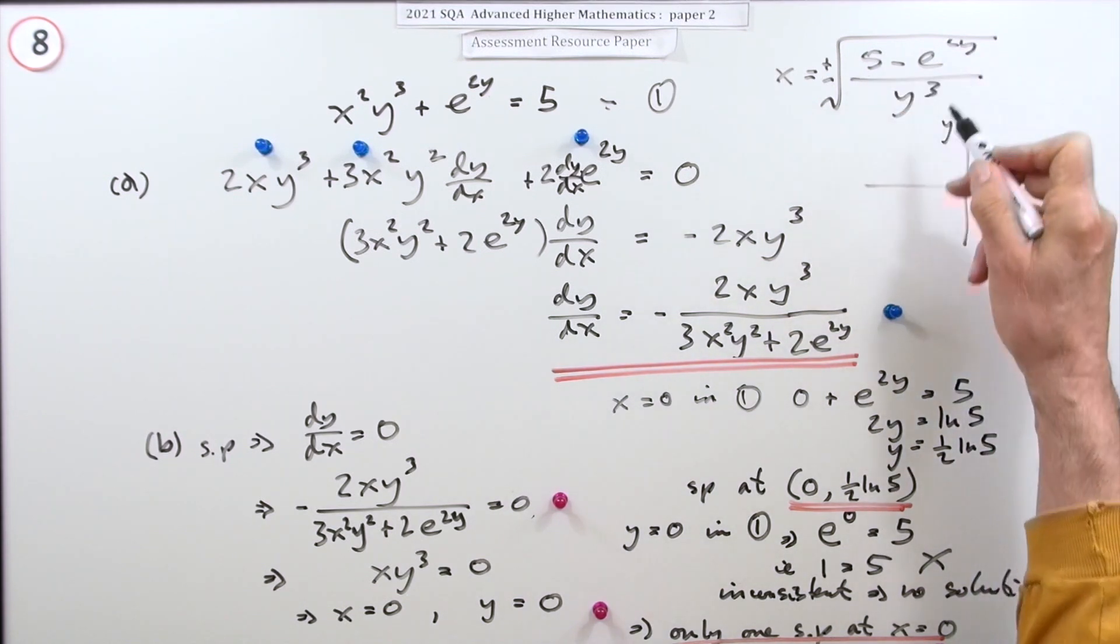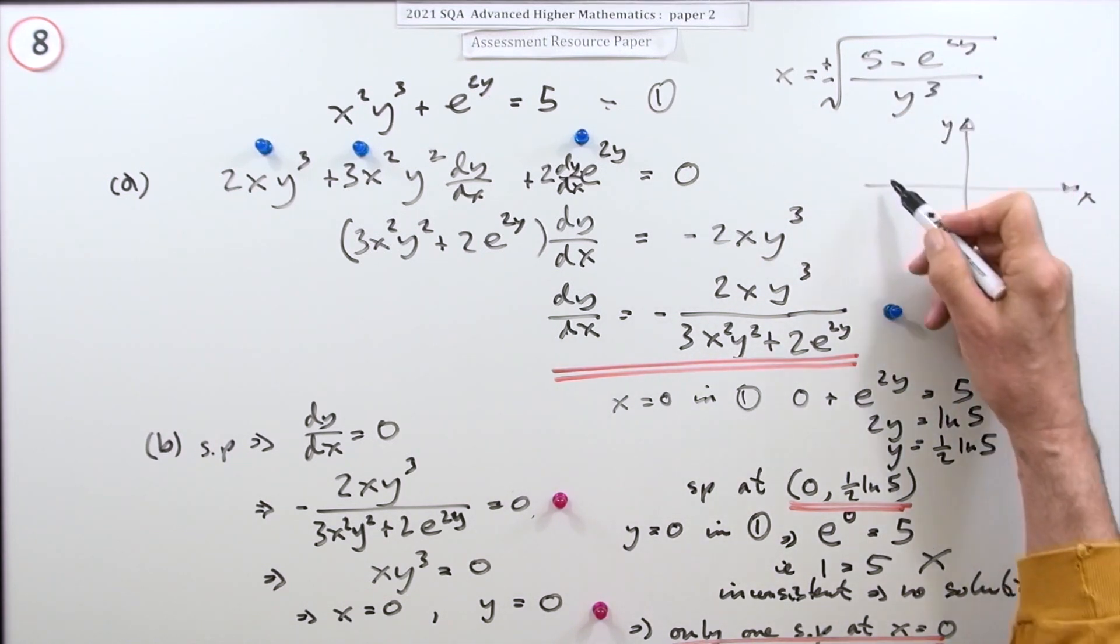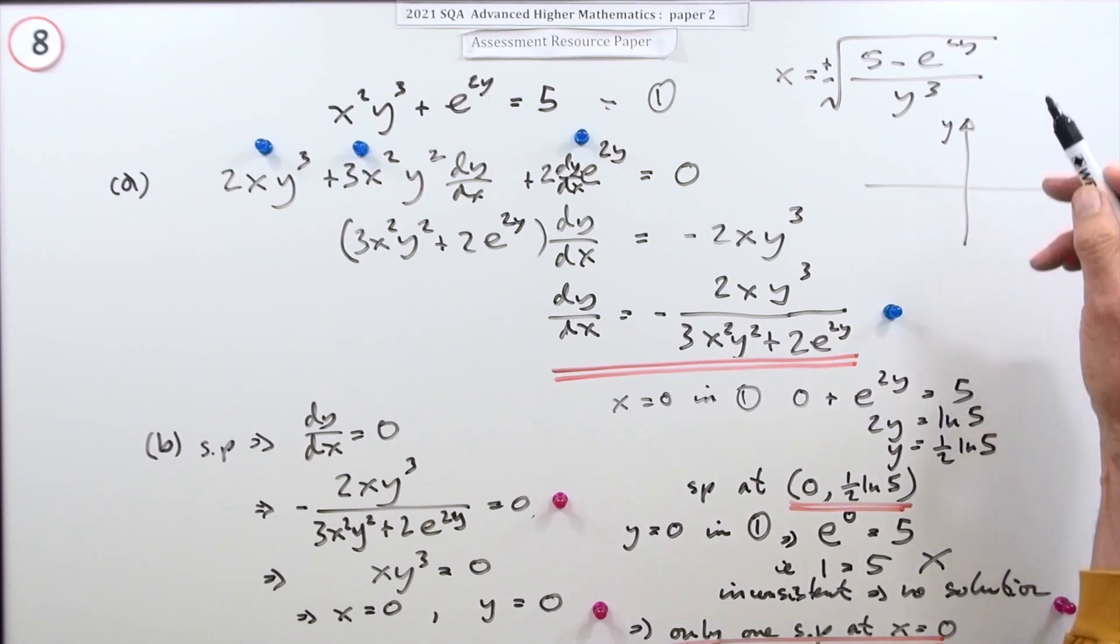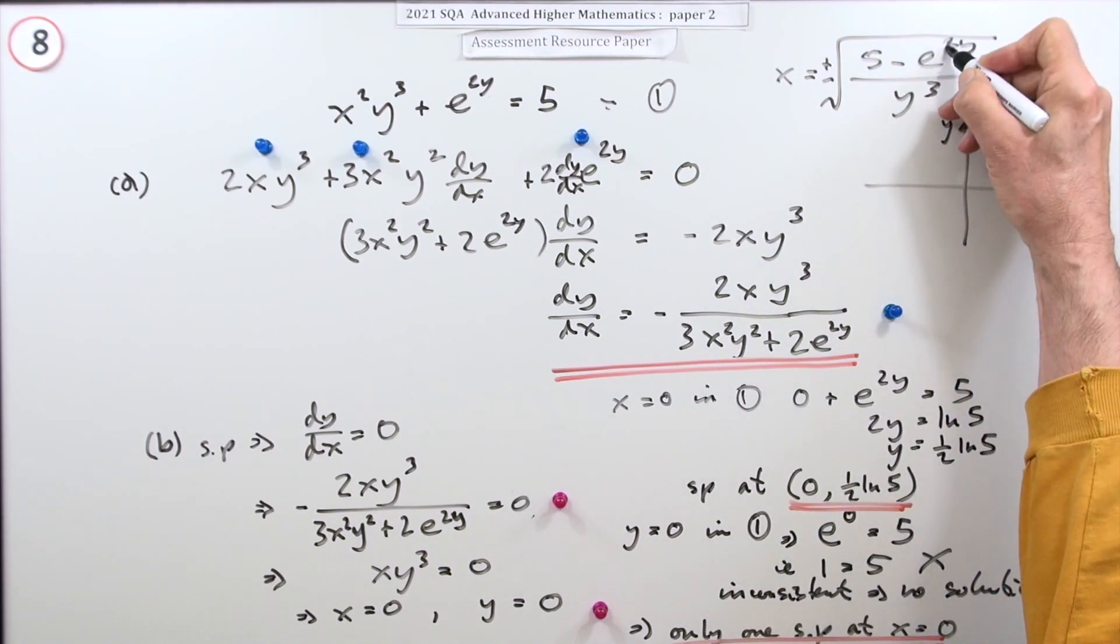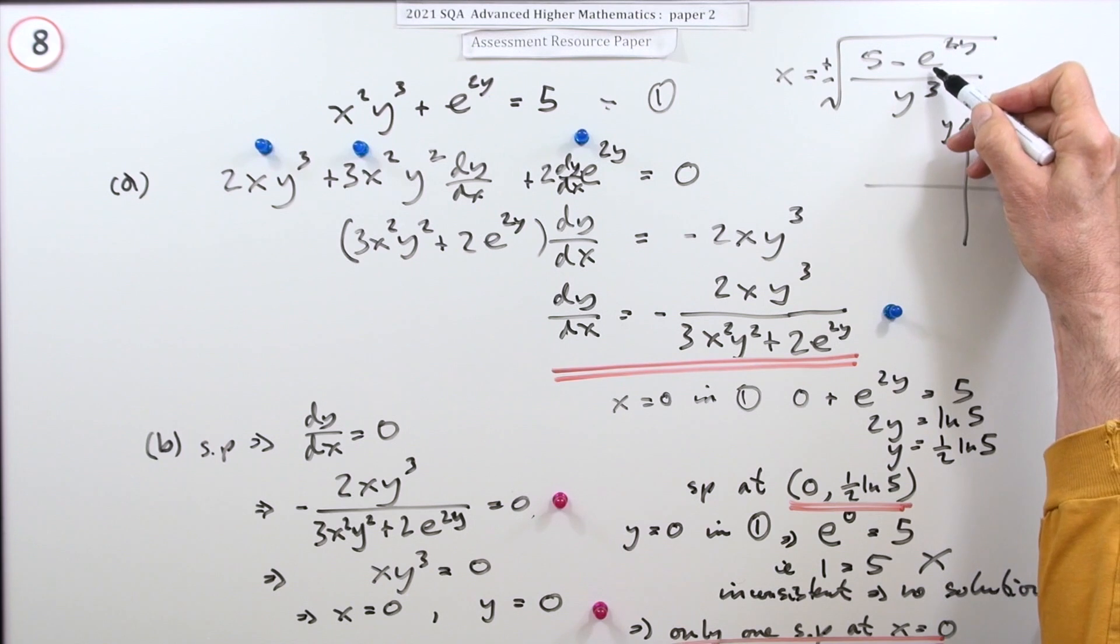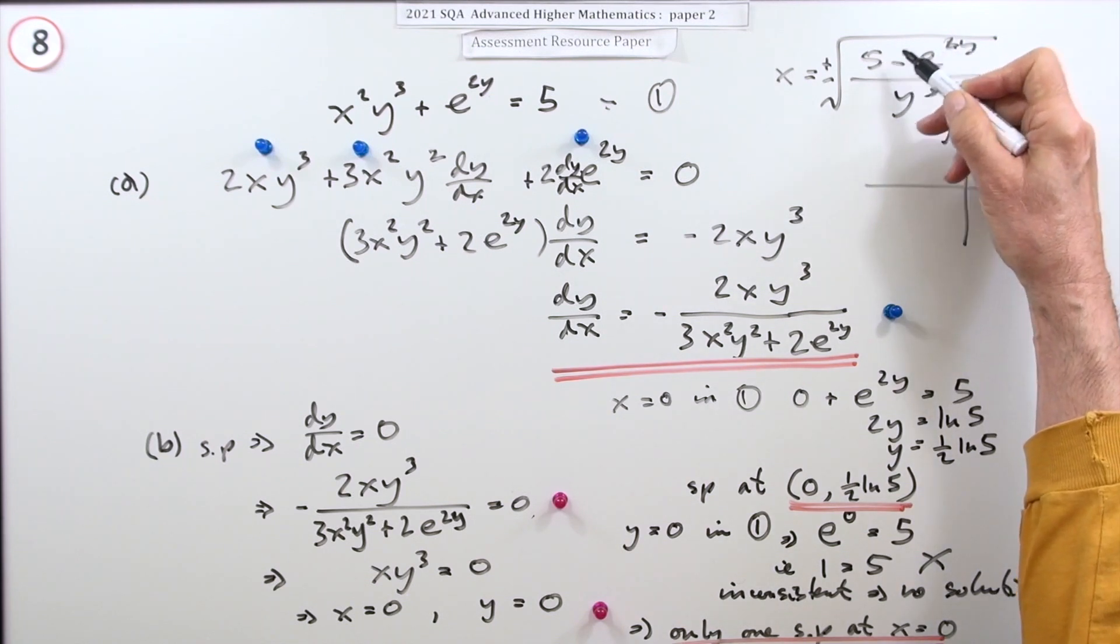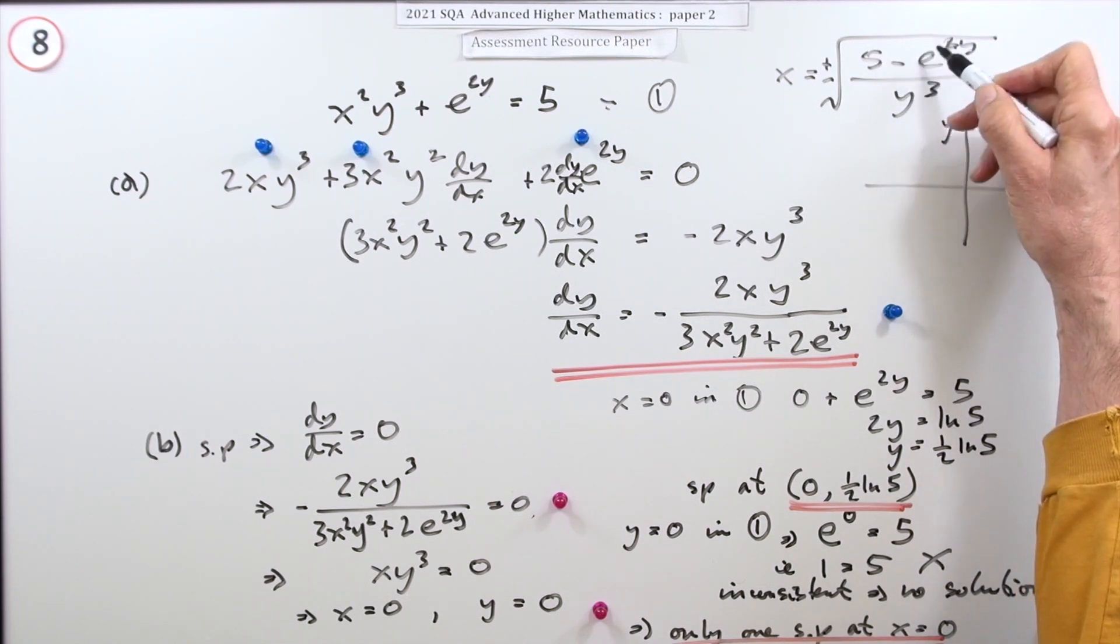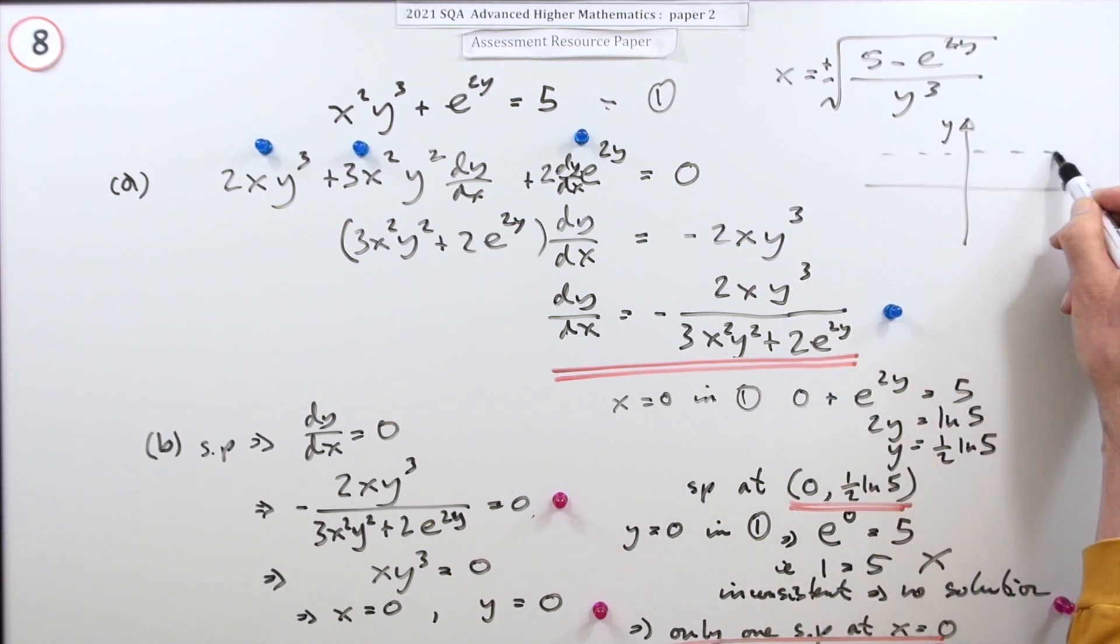y can't be negative, so I can forget all of this part - the graph exists up here. But also, with 2y in the top, once e^(2y) reaches 5, the top would go negative. So there's a top limit as well. This graph is squashed in here.